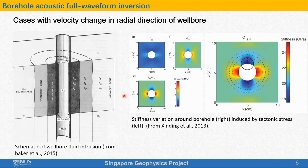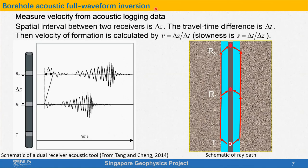Other cases like borehole damage or shale swelling could also lead to velocity change around the wellbore. Therefore, if we could obtain a 2D or even 3D velocity model around the borehole, it could provide useful geomechanic information. This is the reason why I propose to use full waveform inversion to obtain elastic wave velocities around the borehole. Before talking about full waveform inversion, let's first talk about conventional methods to measure velocity from acoustic logging data.